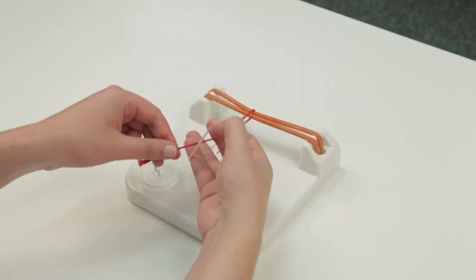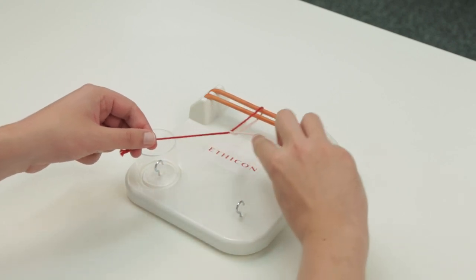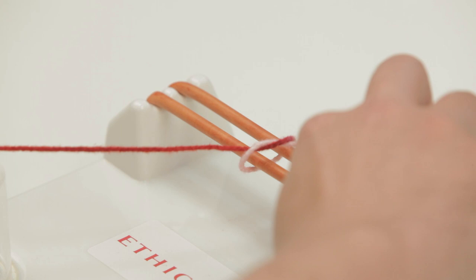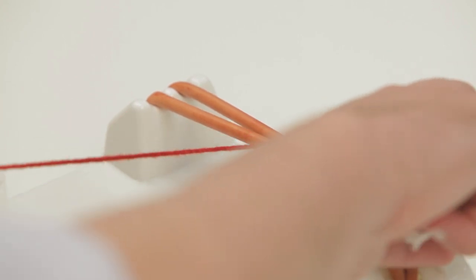Roll your digits so that the string lies on the back of the ulnar aspects of your digits and use your middle finger to turn and loop the suture through. Push it away from you ensuring there is a square knot.